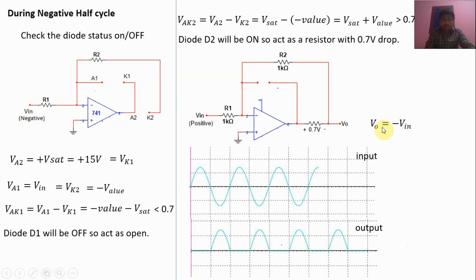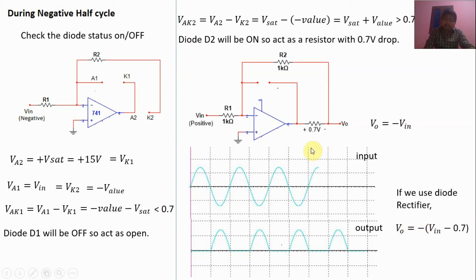If we use a diode rectifier without an op-amp, we get output with diode voltage drops at the output side. But if we use an op-amp with a diode rectifier, we get the exact input replicated at the output side without the diode drop. That is why the op-amp with diode rectifier is called a precision rectifier.